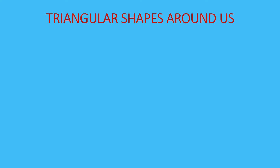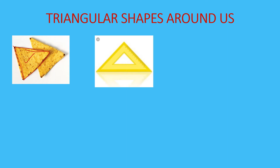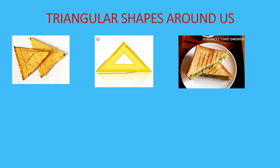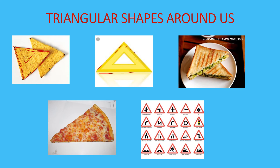Now we know what triangles are. Can you give some examples of triangular shapes around you? Here are a few examples. These chips called Bingo have a triangular shape — one side, second side, third side, and it is closed. In your geometry box there is a set square, which is also a triangle. A sandwich piece has a triangular shape, as does a slice of pizza. And some traffic signs on the road are also in a triangular shape. These are a few examples of triangular shapes around us.